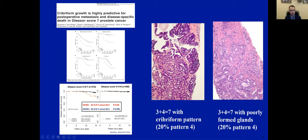Several European studies, primarily from the Dutch group, have shown that patients with grade group 2 — that is 3+4=7 prostate cancer — harboring cribriform growth is highly predictive for post-operative metastasis and disease-specific death, compared to Gleason score 6 or compared to Gleason score 7 lacking this cribriform morphology. So it is now important for us as pathologists to correctly separate cribriform Gleason pattern 4 from other sub-patterns of pattern 4.